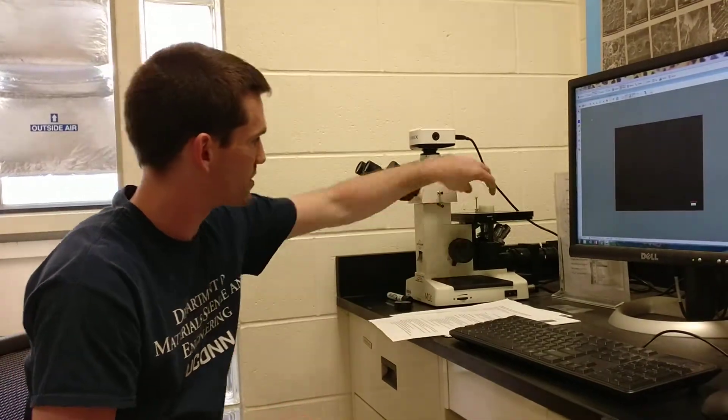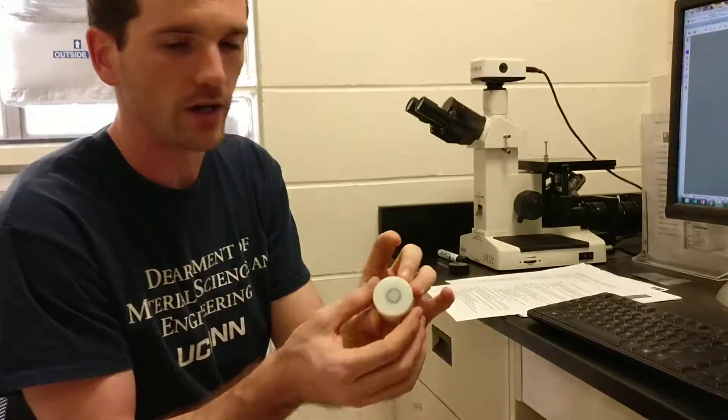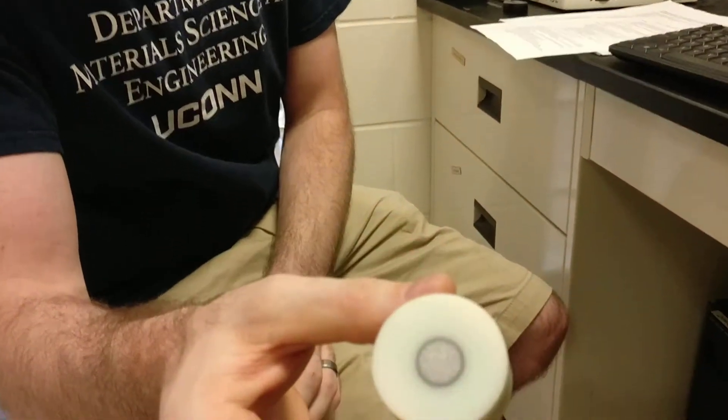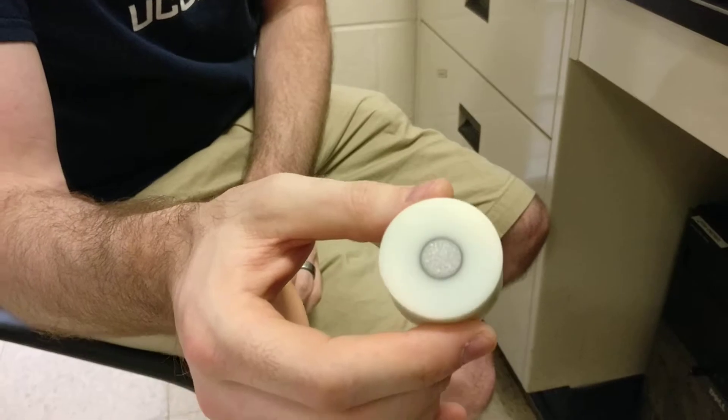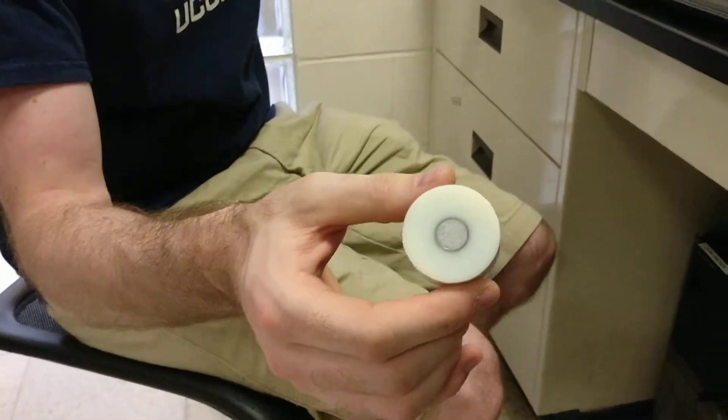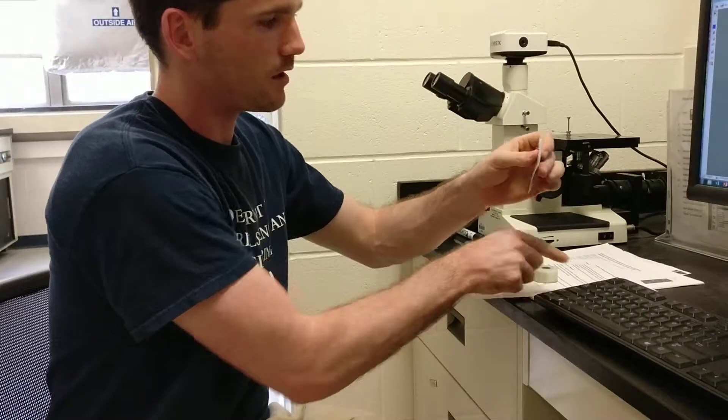The three different samples we have are a thermal barrier coating. The coating on here is very thin so it's very hard to see. The second sample we'll look at are these carbon fibers.